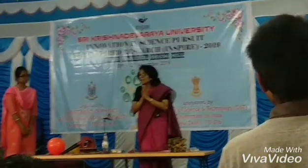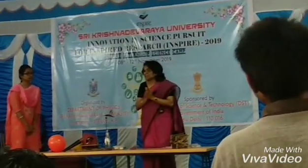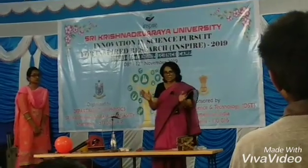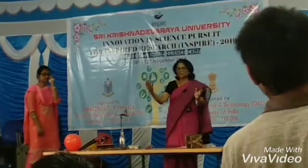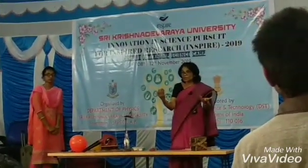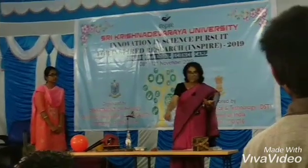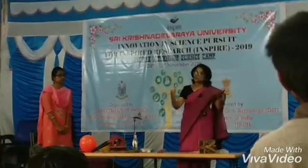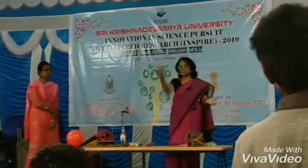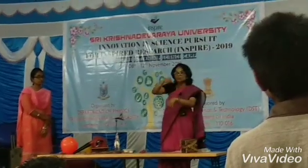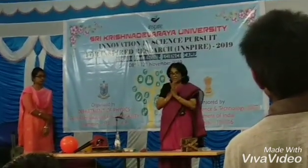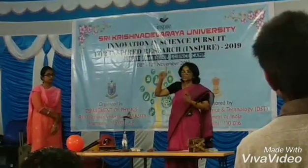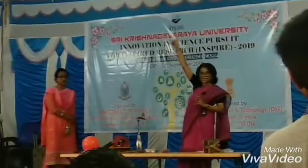This is called levitation. You must have seen some pictures — some gurus, magic people — they will say I can float in air. How are they floating? There is gravitational force and there is some other force which you cannot see, which is pulling it up. These two forces, when they become equal and opposite, then it will levitate. So the ball was levitating at some height.